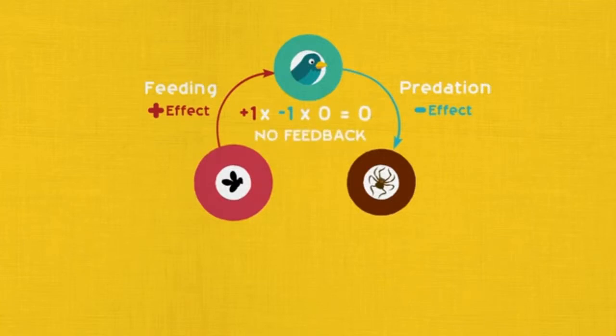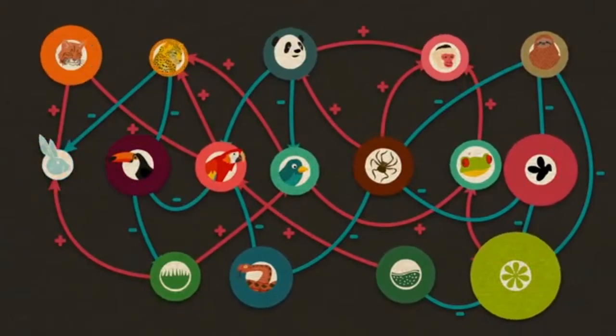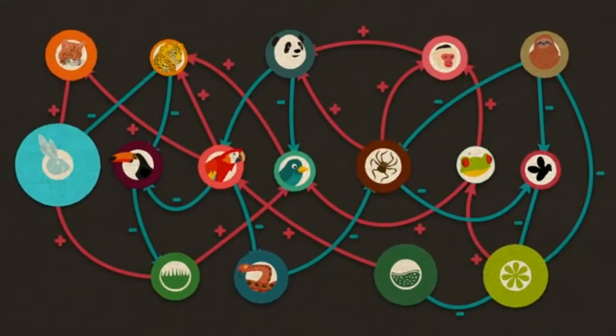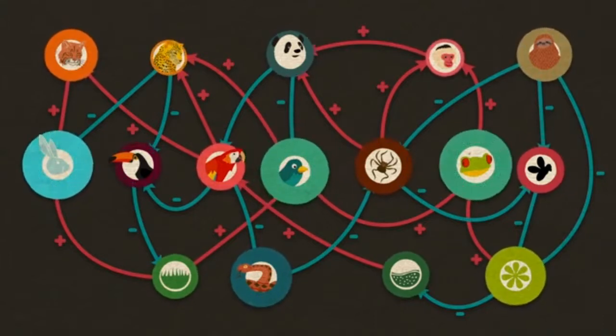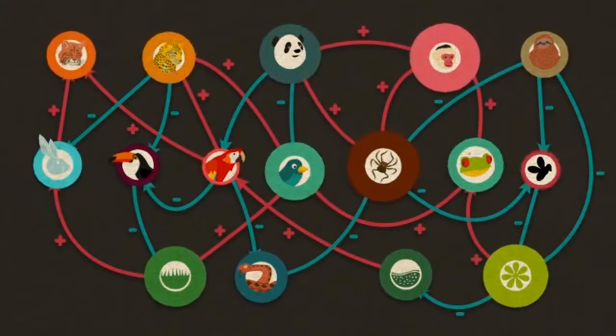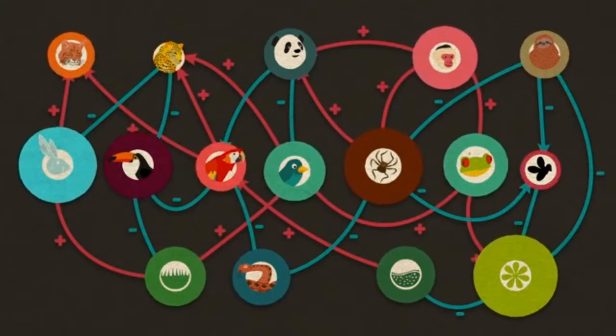But this is only a simple example, since natural communities consist not of separate food chains but networks of interactions. Feedback loops will often be indirect, occurring through longer chains. A food web containing 20 populations can generate thousands of loops of up to 20 links in length.